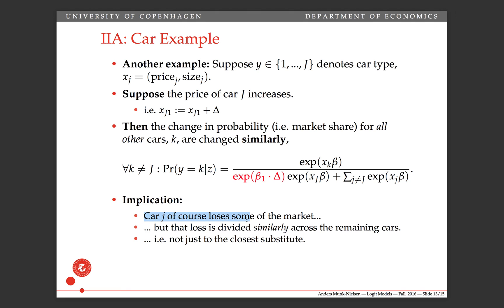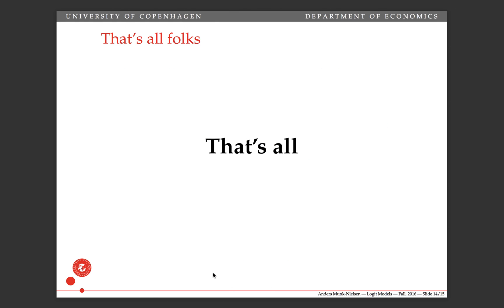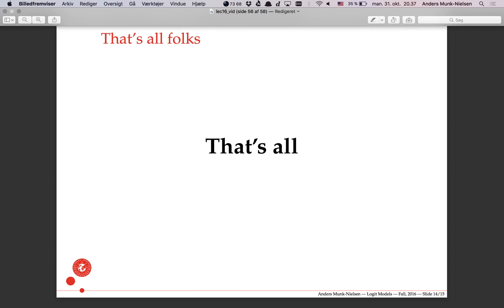So, car j, of course, loses some of its market share, but that loss is divided in a similar fashion among the remaining cars. So it's not just the closest substitute that it steals market share from. And in that sense, IIA is a restriction on the possible substitution patterns. That's all I have for you in this online lecture.